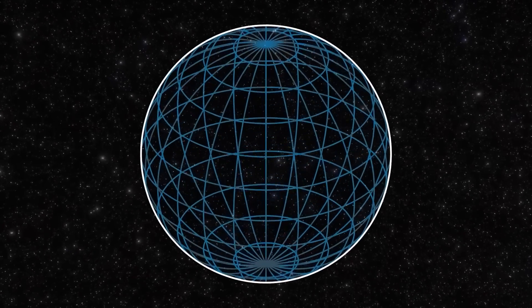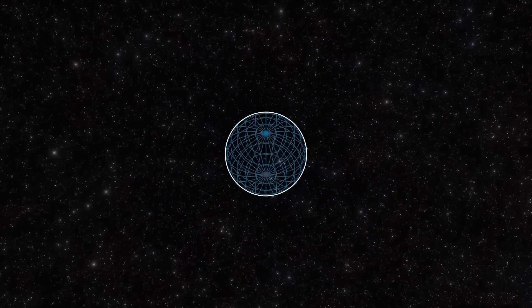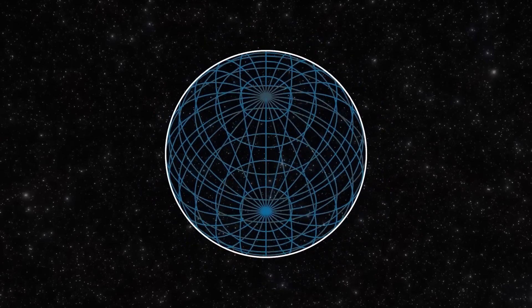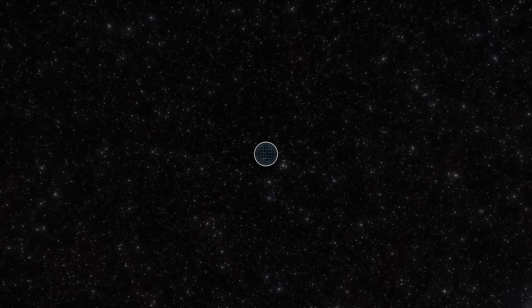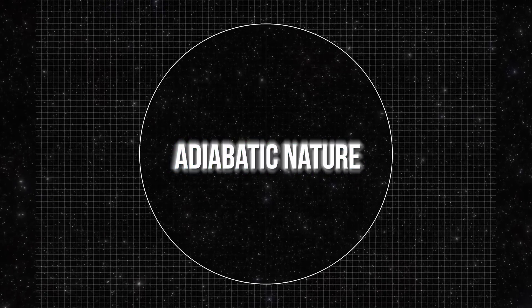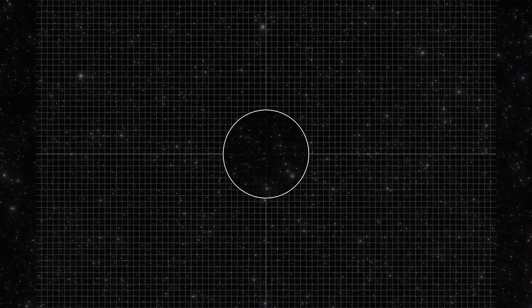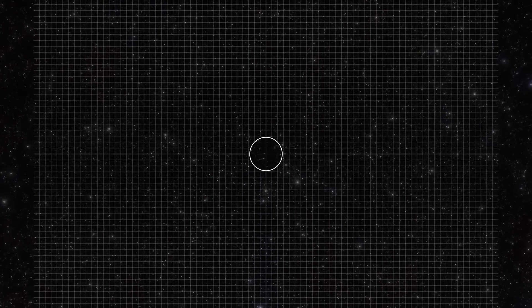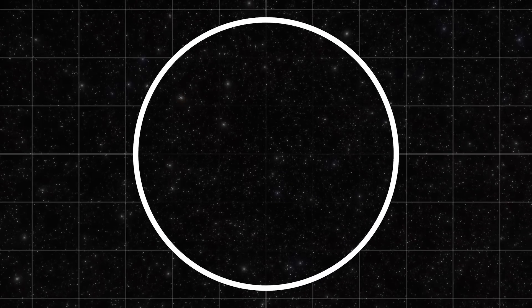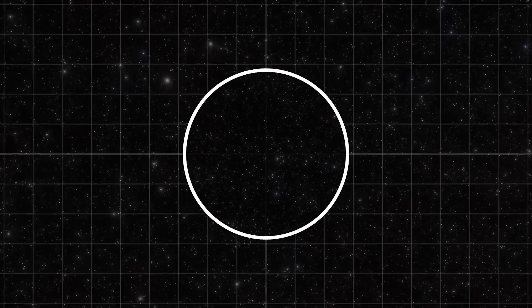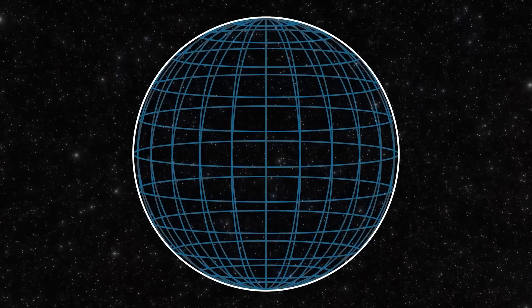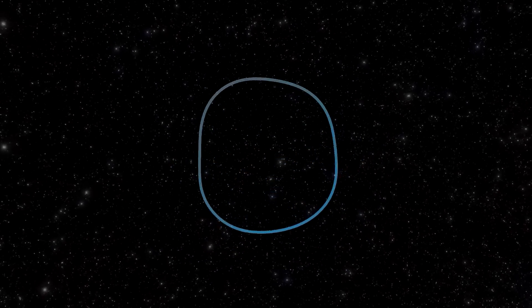During our study of the universe, we come across some fascinating discoveries. One of them is the absence of spatial curvature, just as we expected. We've also noticed that the initial variations in the universe follow a certain pattern known as adiabatic nature. Additionally, the spectrum and size of these initial variations match what we would predict if the inflation theory was correct. Surprisingly, we've even found fluctuations that are larger than we previously thought possible, which aligns with what inflation theory tells us. All of this is quite captivating.